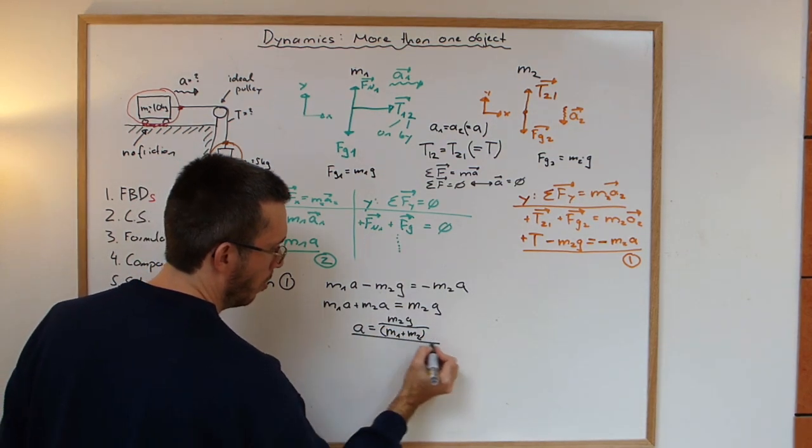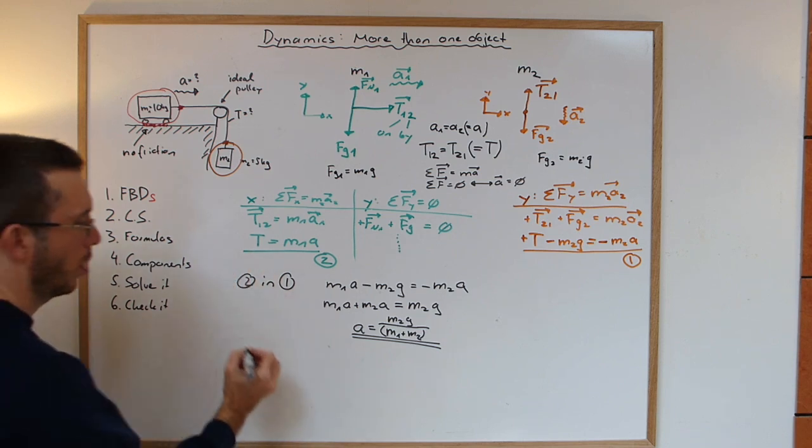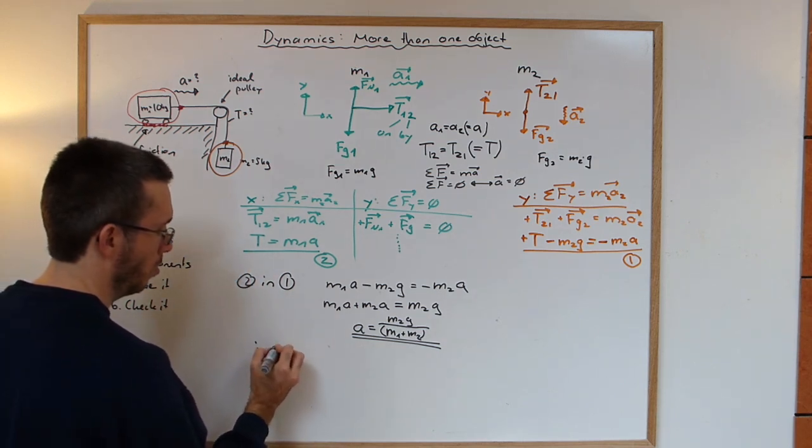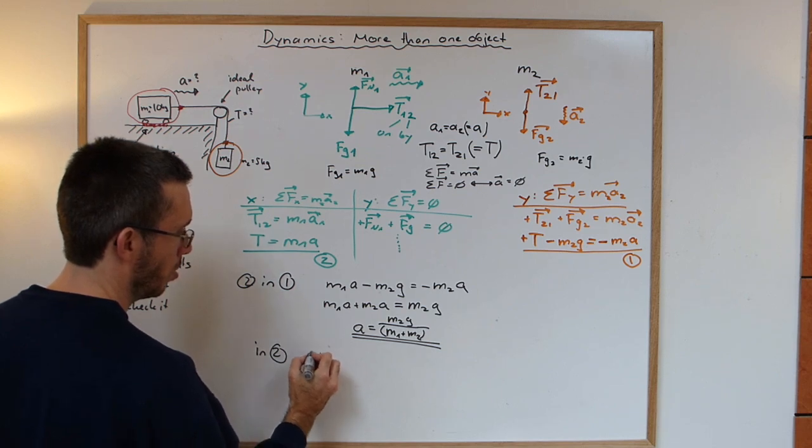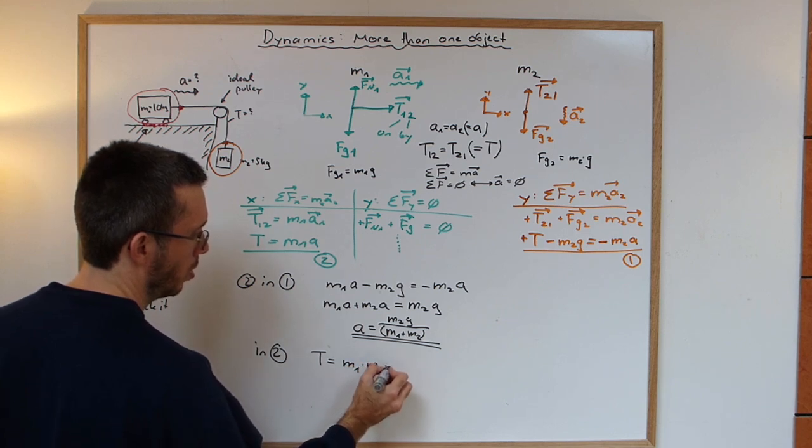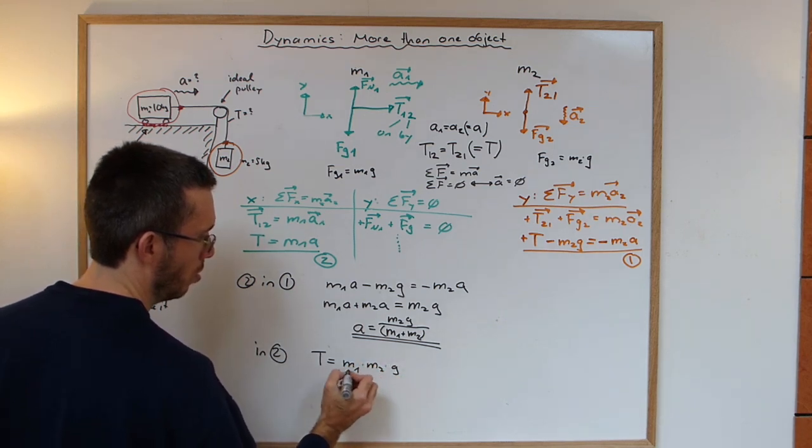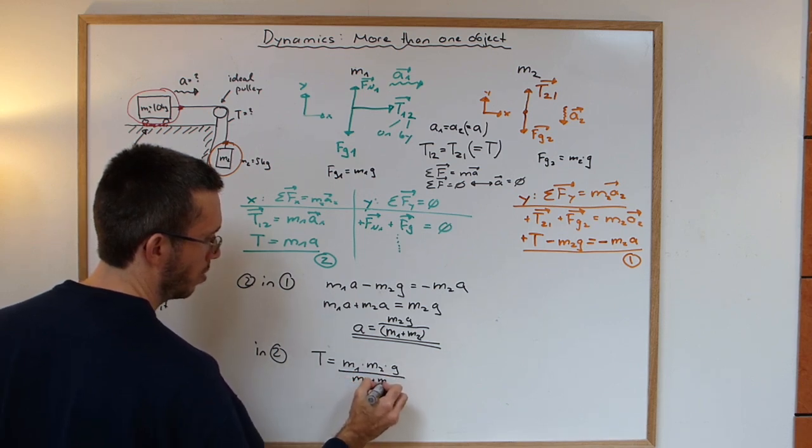So I have acceleration is m2g over m1 plus m2 in brackets. I'm actually not going to solve it with numbers. I'm going to leave it in symbols here. And then I can replace this in my equation, in equation two. So tension is m1 times m2 times g over m1 plus m2.